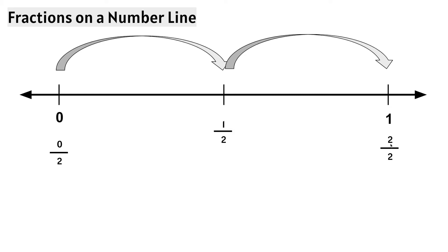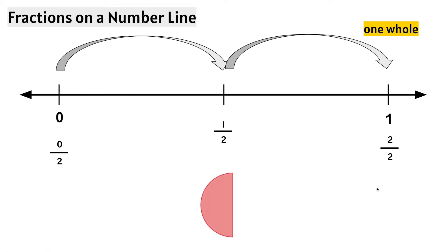We know 2 halves is the same thing as 1 whole, which is right here. Here we have 0 halves, here we have 1 half, and here we have 2 halves, which makes 1 whole. We know the denominator is 2 because there are 2 spaces between the whole numbers 0 and 1.